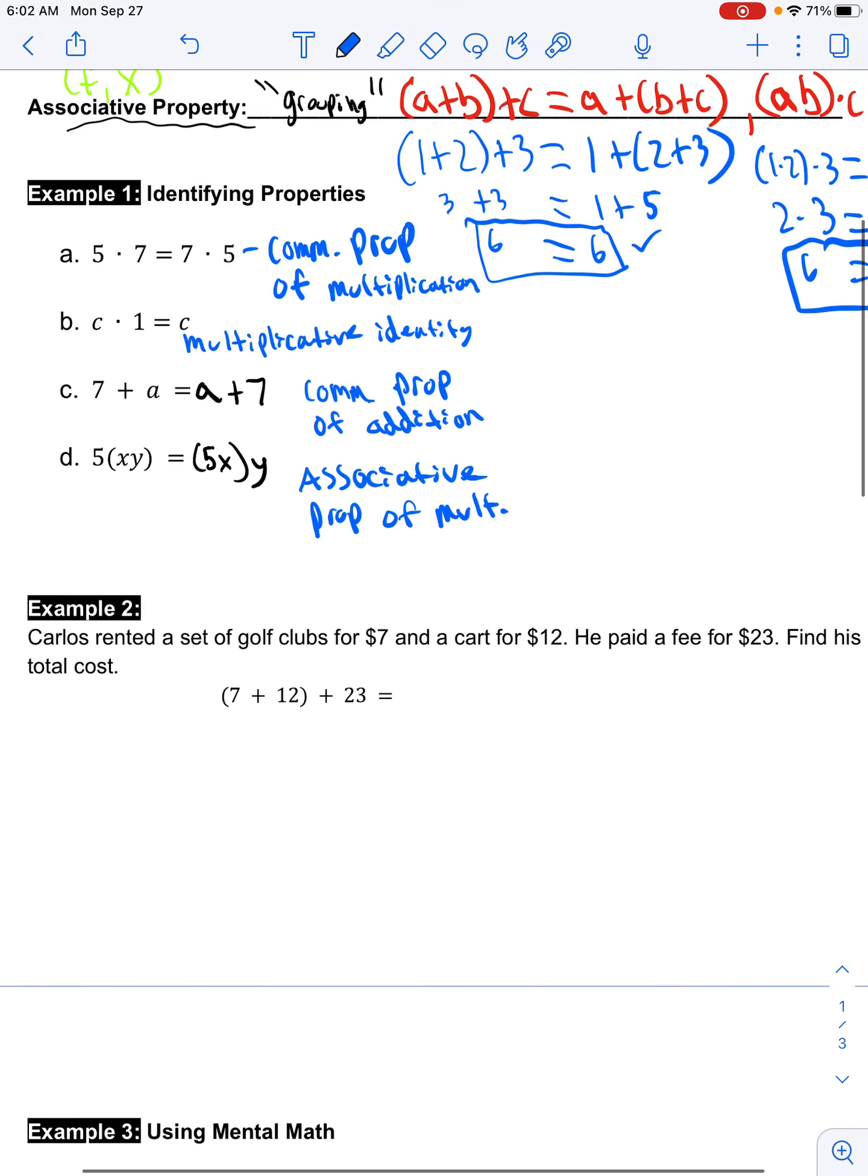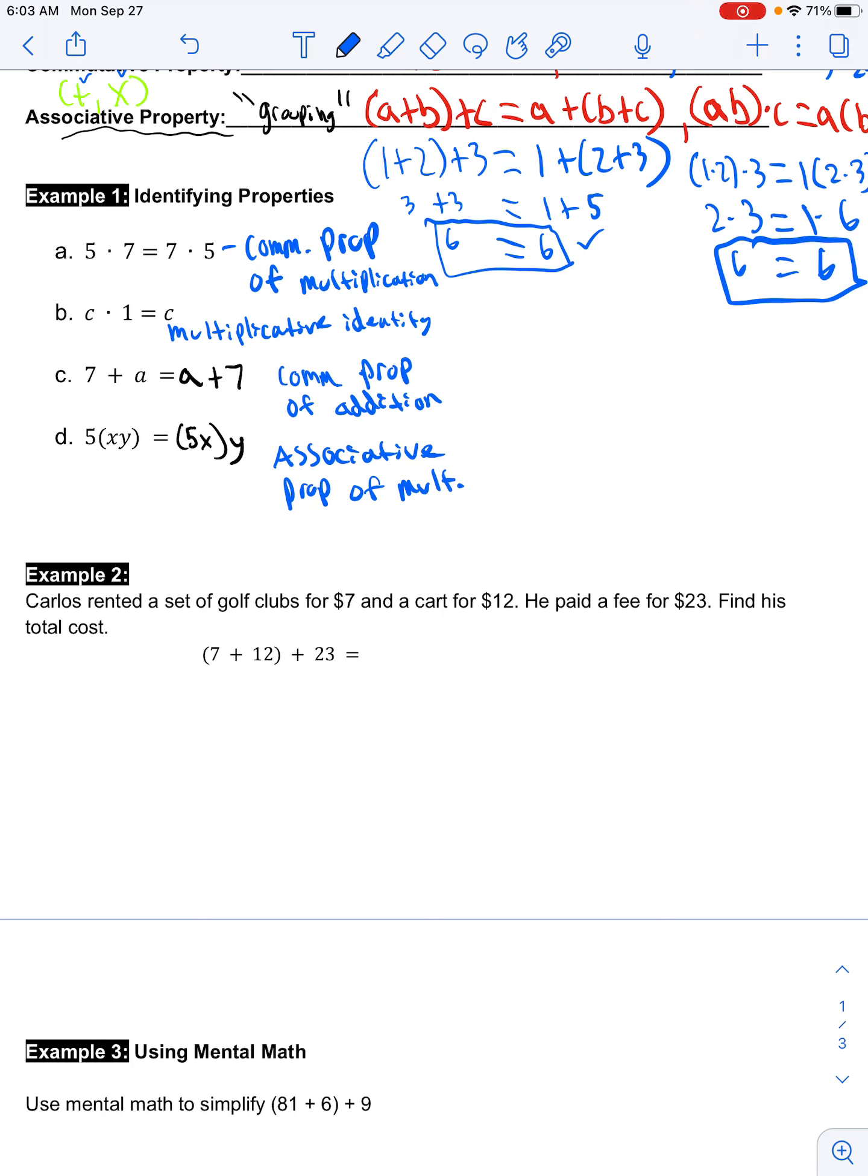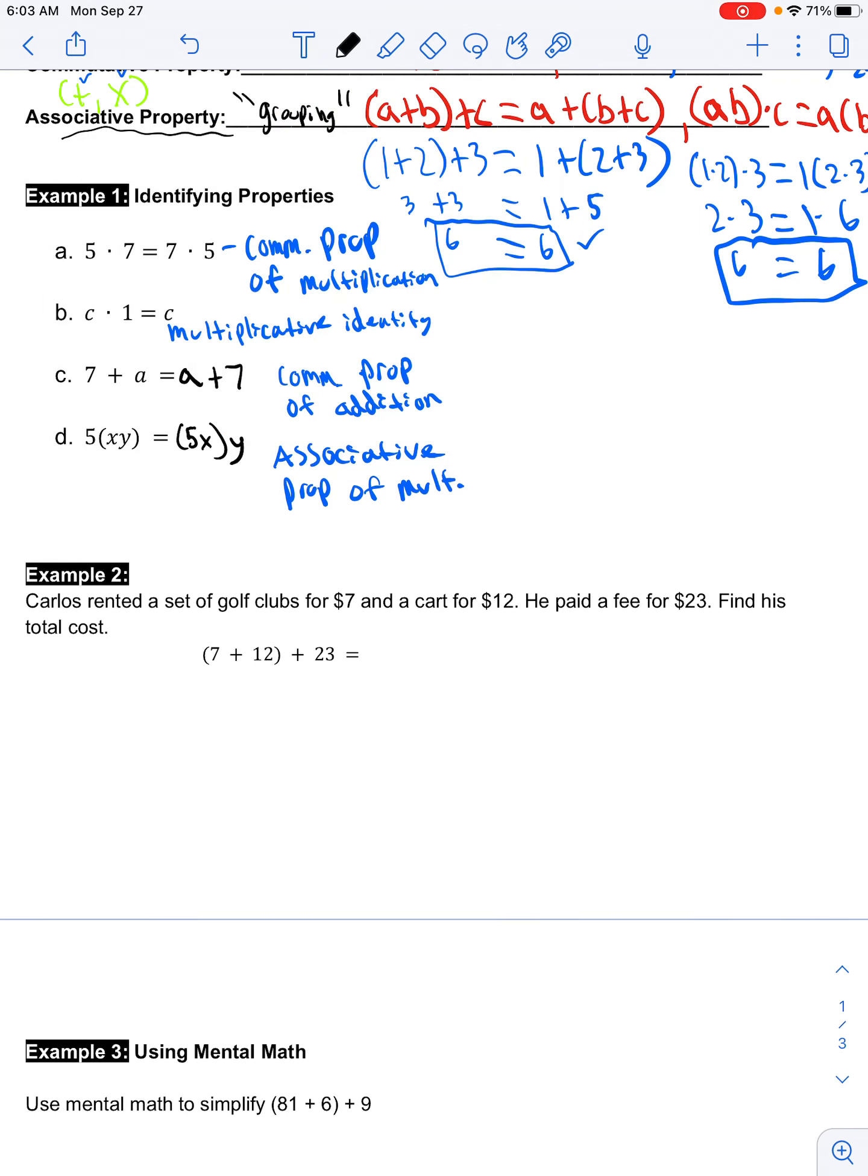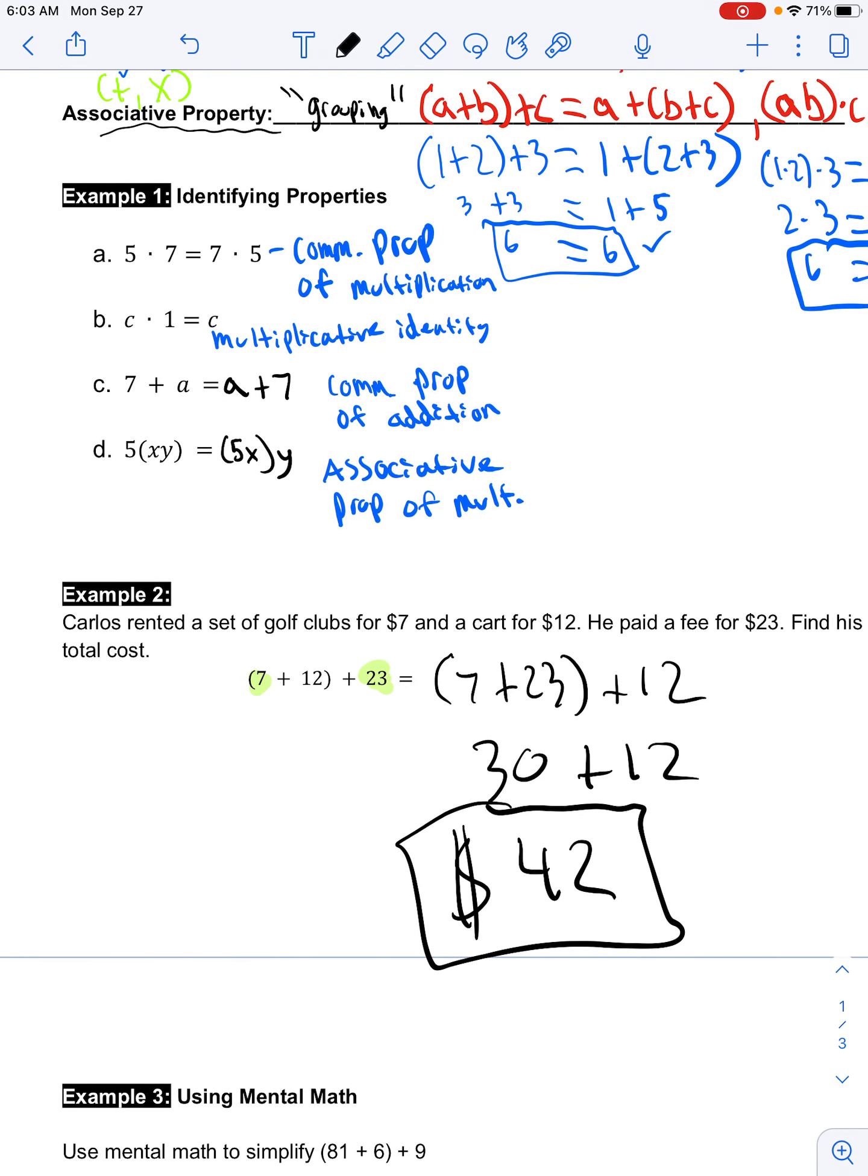Let's look at an example. Carlos rented a set of golf clubs for seven dollars and a cart for twelve dollars. He paid a fee for twenty-three dollars. Find his total cost. Maybe I say, hey, I want to change up this order to make it easier. So I'm going to group these numbers together because they're going to add nice. So I'm going to say, hey, I want to do seven plus twenty-three and then add twelve at the end. Well, seven plus twenty-three is thirty and thirty plus twelve gives me forty-two. So he's going to pay a total of forty-two dollars. Why this becomes helpful is because it can make our job easier, our math easier for us to complete.